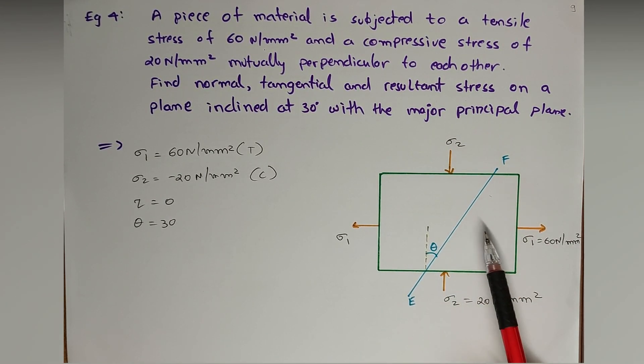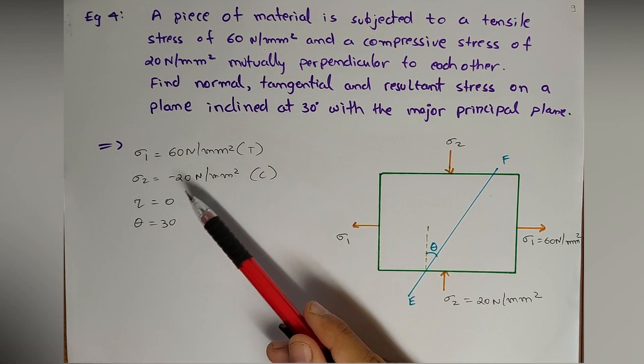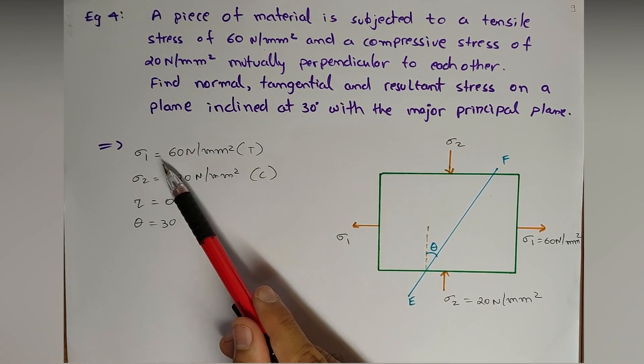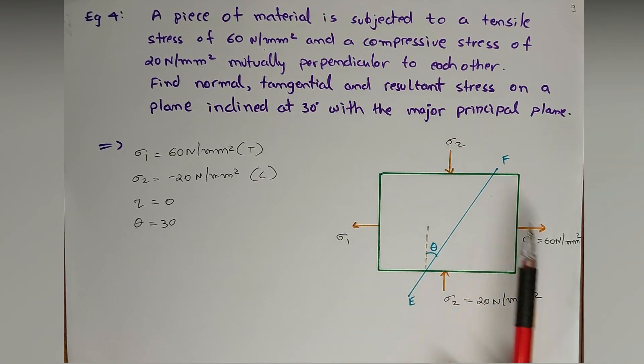Based on this figure, I have plotted the values. The data is: sigma 1 equals 60 Newton per mm square, it is tensile. Sigma 1 is always positive as per the sign convention.